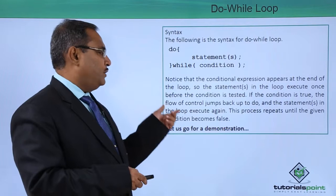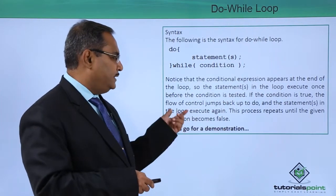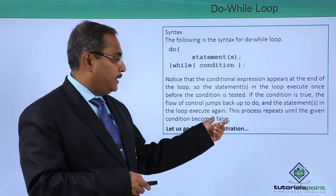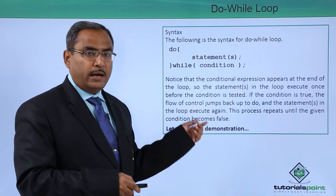If the condition is true the flow of control jumps back to do and the statements in the loop execute again. This process repeats until the given condition becomes false.